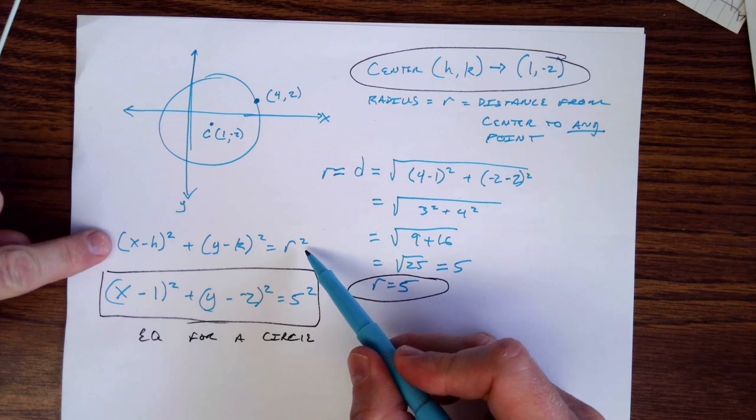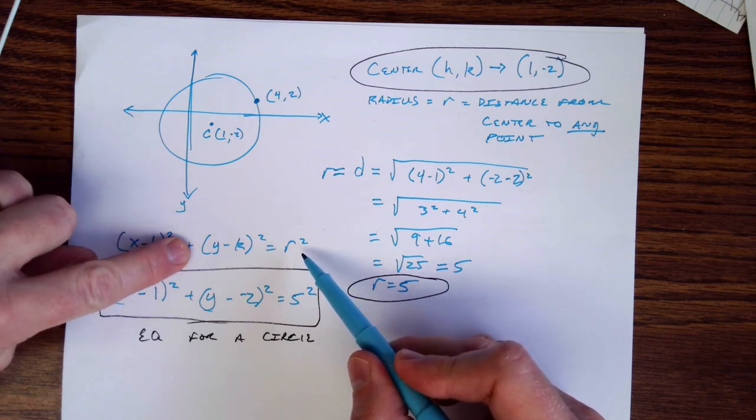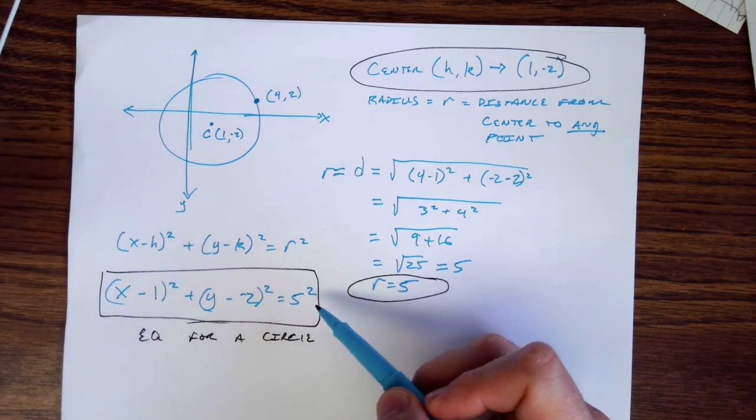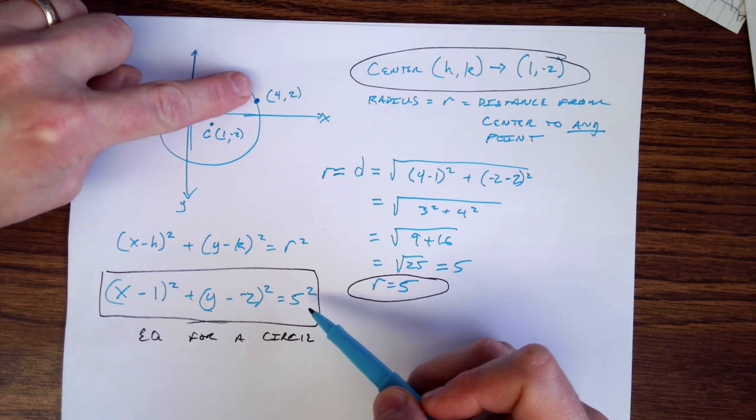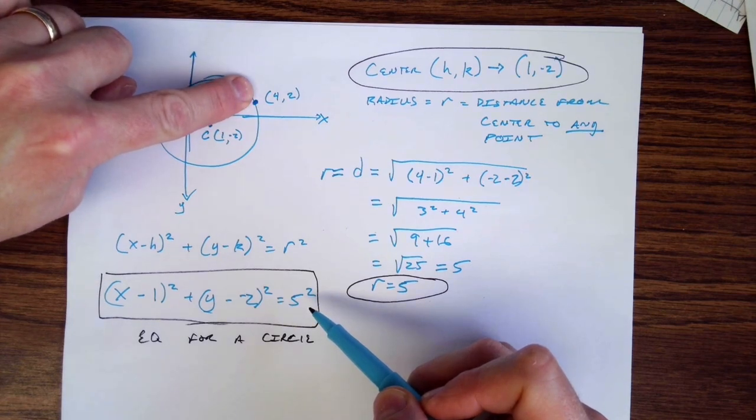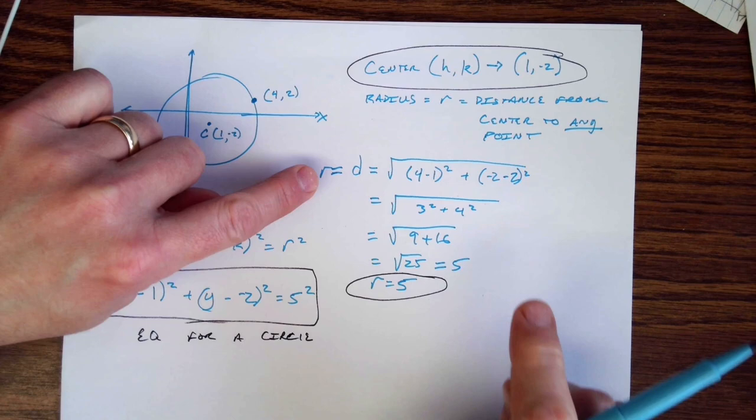You need the equation for a circle, which is x minus h squared plus y minus k squared equals r squared. You need the center of the circle, wherever that may be. You need some other point on the circle so that you can find the radius.